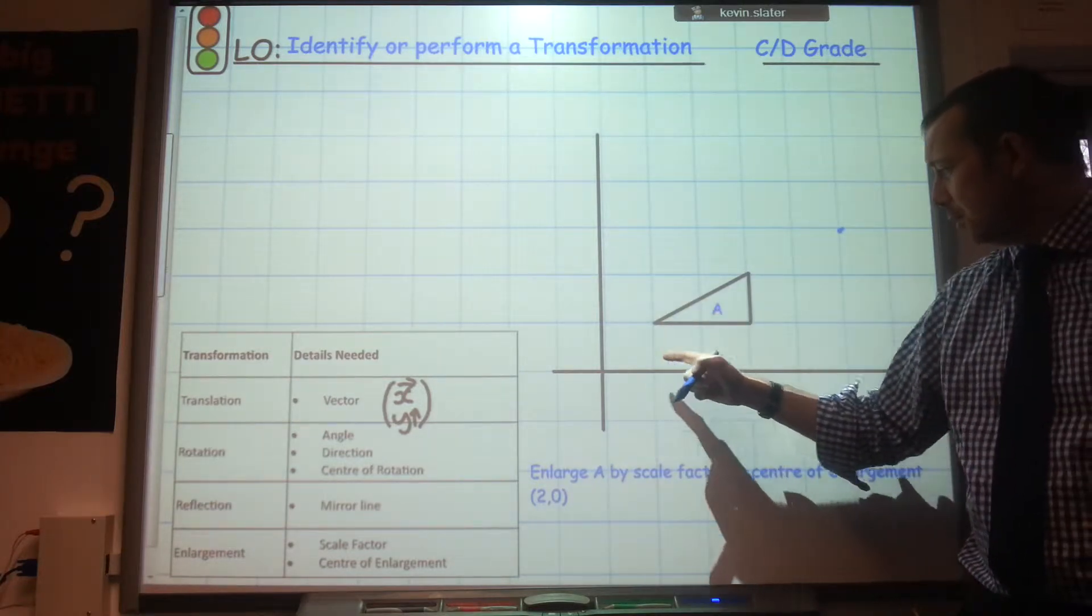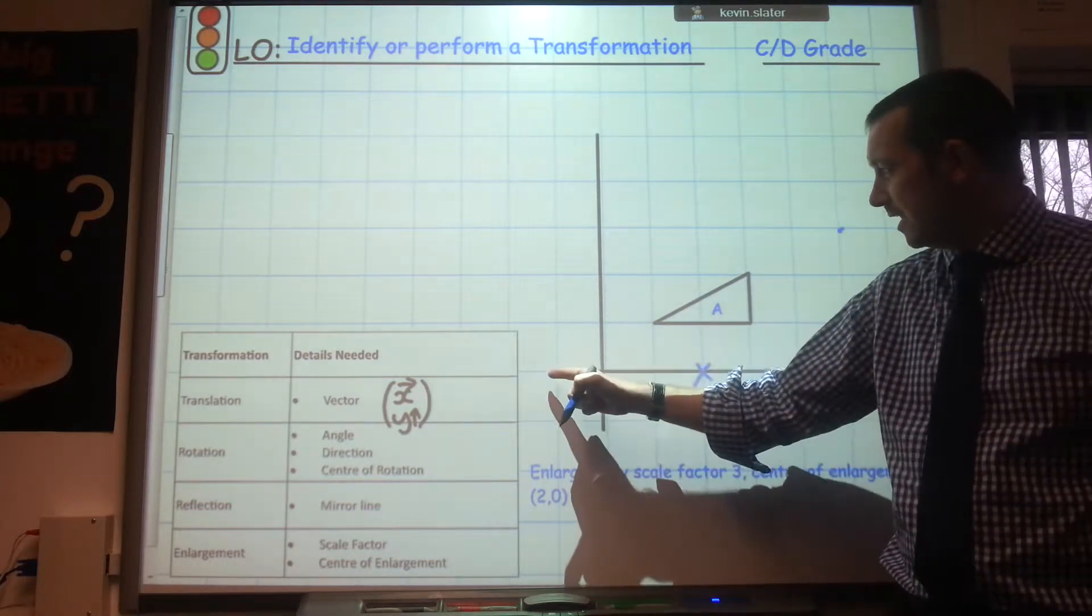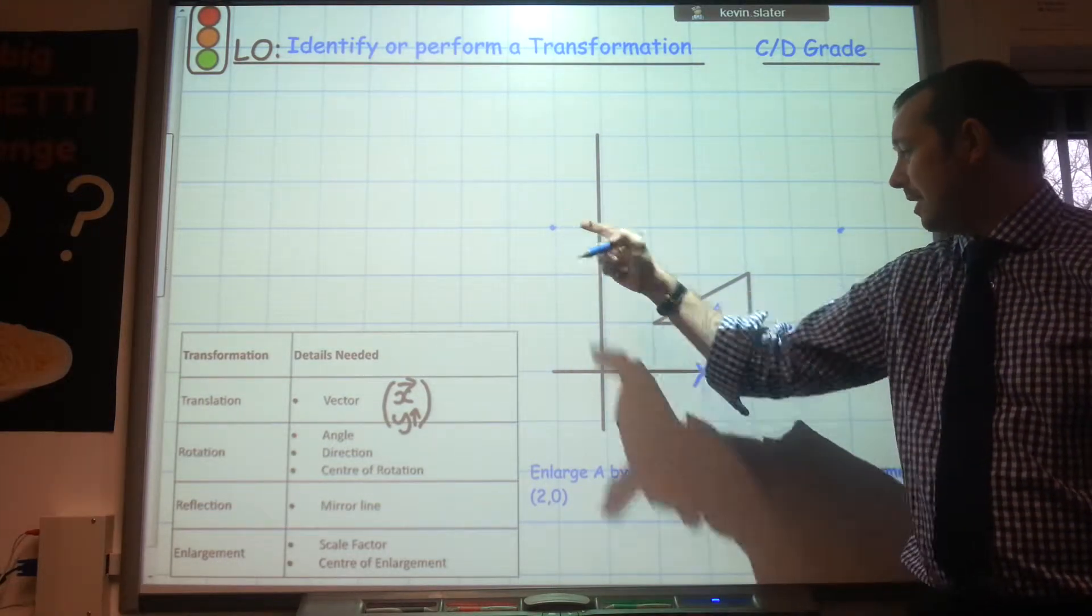To get to this corner I need to go along 1 and up 1. So now I need to go along 3 and up 3. So that corner will now be there.